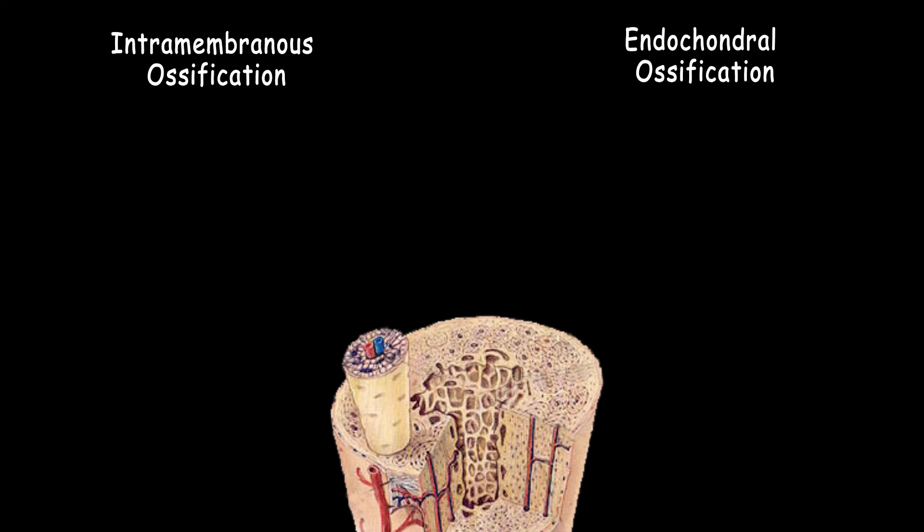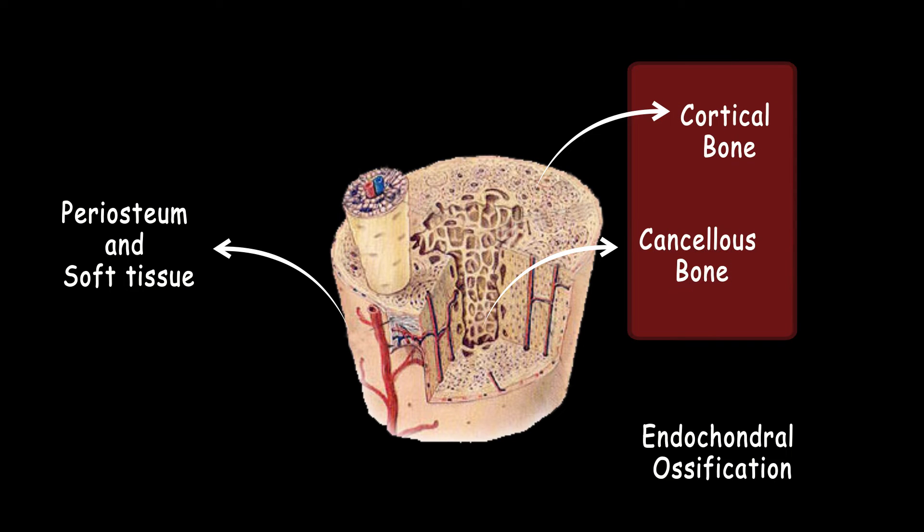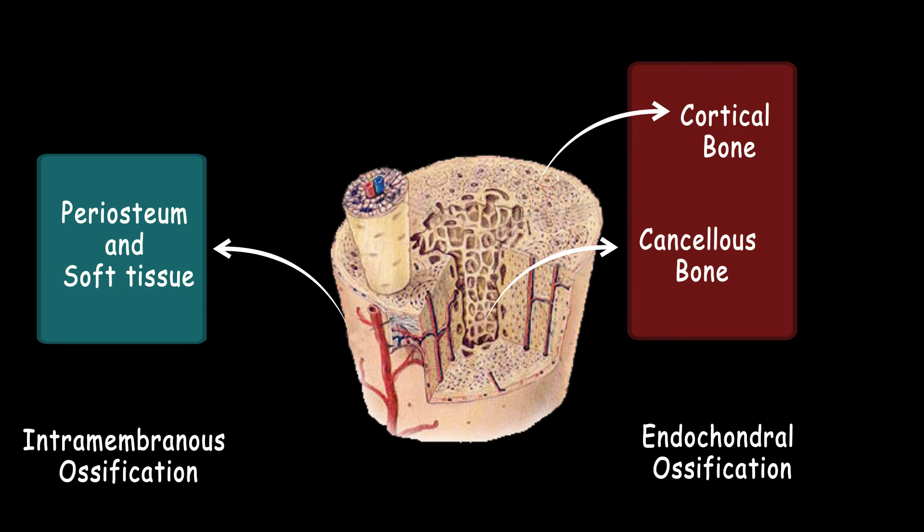During the bone healing process, four specific repair environments are formed depending on the location of the bone injury: cancellous bone area, cortical bone area, periosteum area and the surrounding soft tissue. The cancellous and cortical bone areas are repaired by endochondral ossification while the other two use intramembranous ossification. Now let's talk about them specifically.